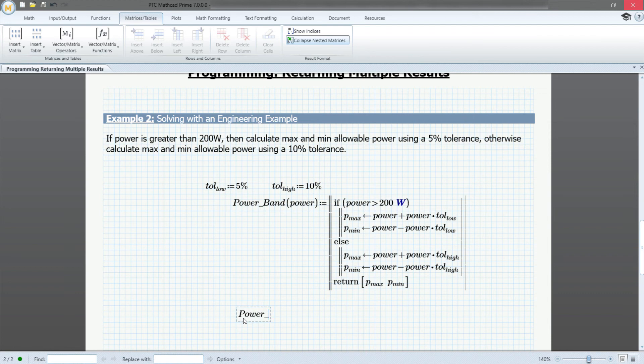Now, if we call our power band variable with a value of 300 watts, we get the maximum and minimum. And if we call the power band variable with a value of 20 watts, it will solve based on this else section.